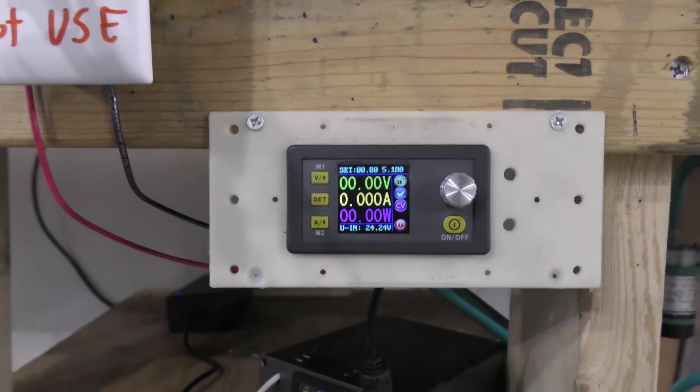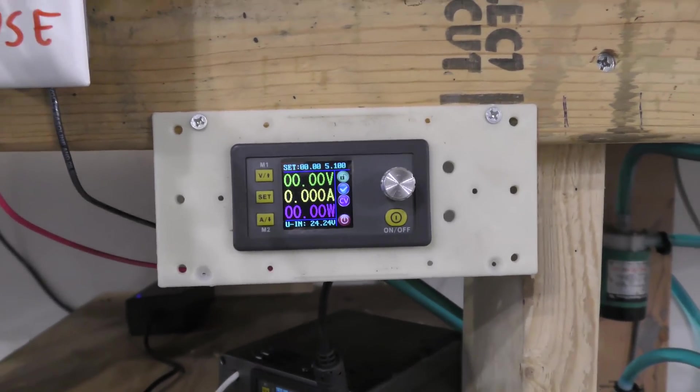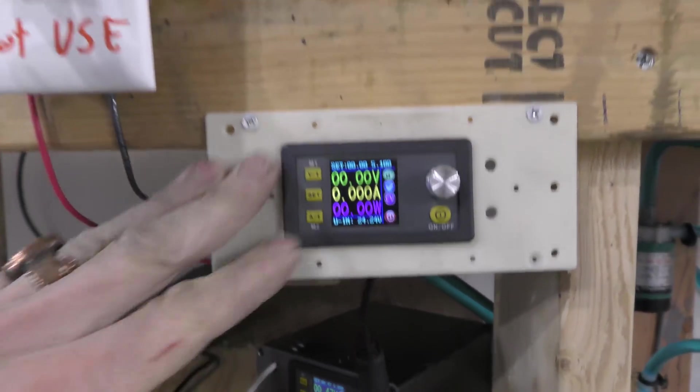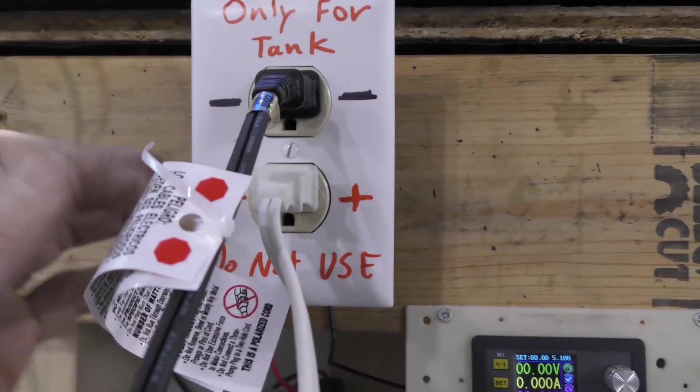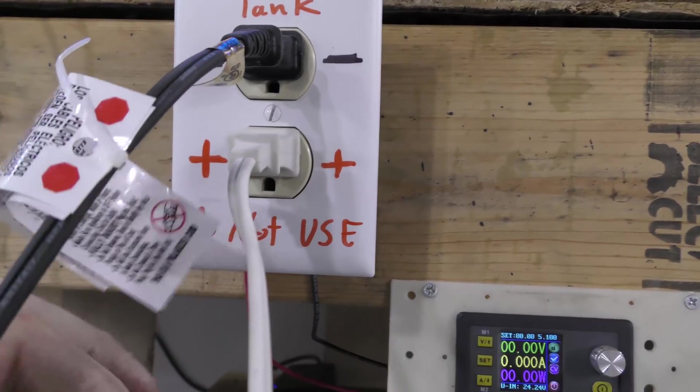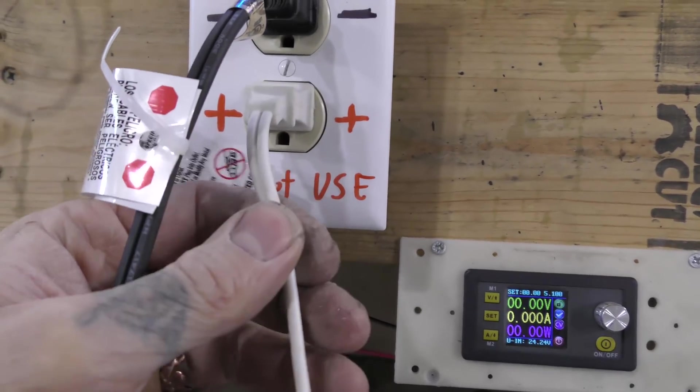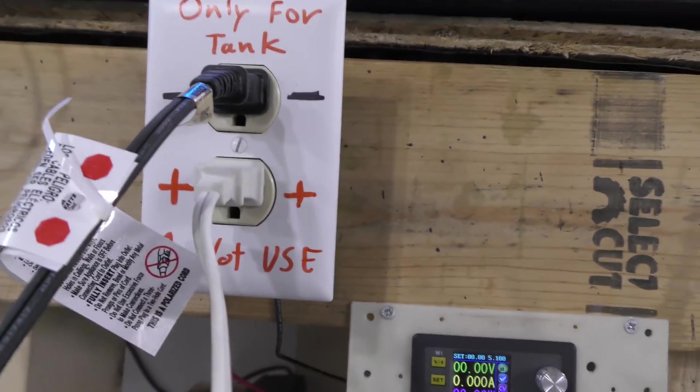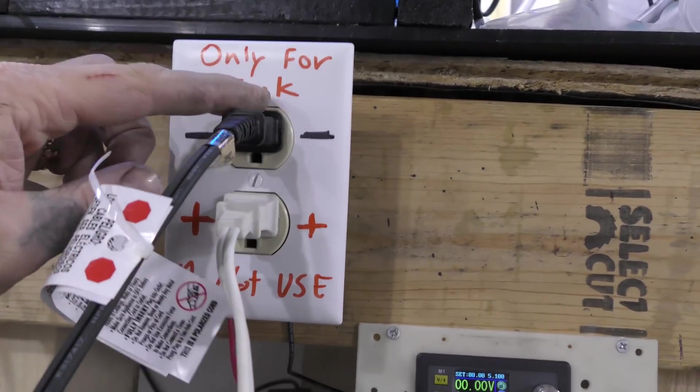Alright, so let me show you how this works. I have my unit. This acts as my banana clips. We've got positive and negative. I'll probably put warning tags on these. Not to use these in standard outlets.